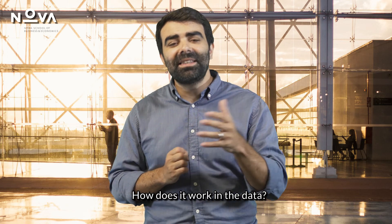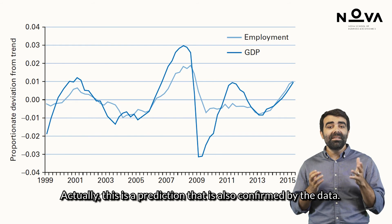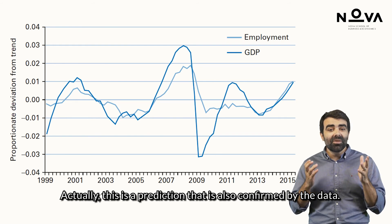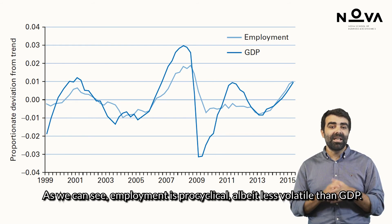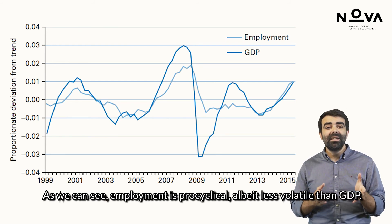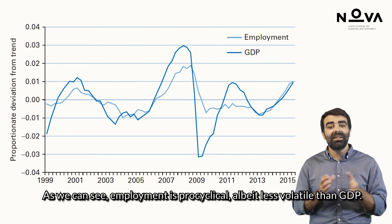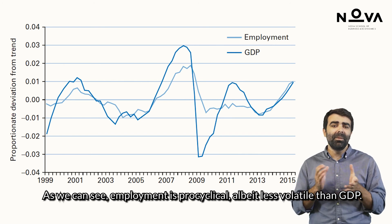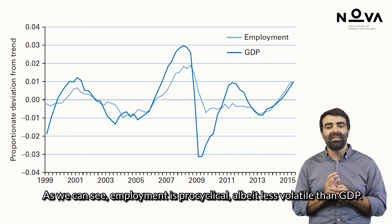How does it work in the data? This is a prediction that is also confirmed by the data. As we can see, employment is pro-cyclical, albeit less volatile than GDP.